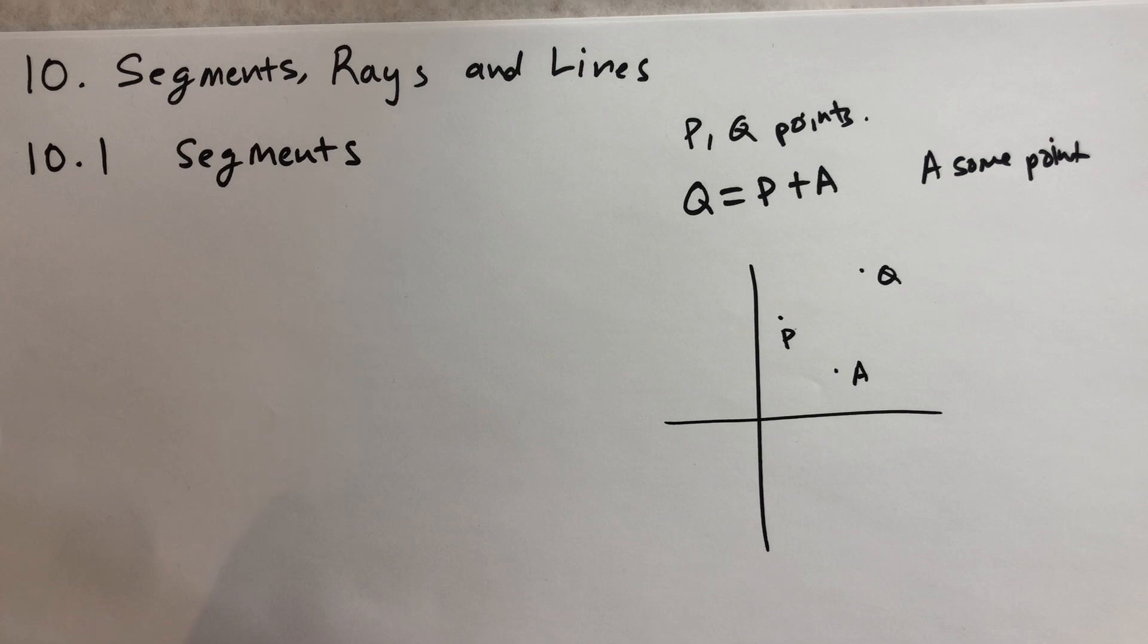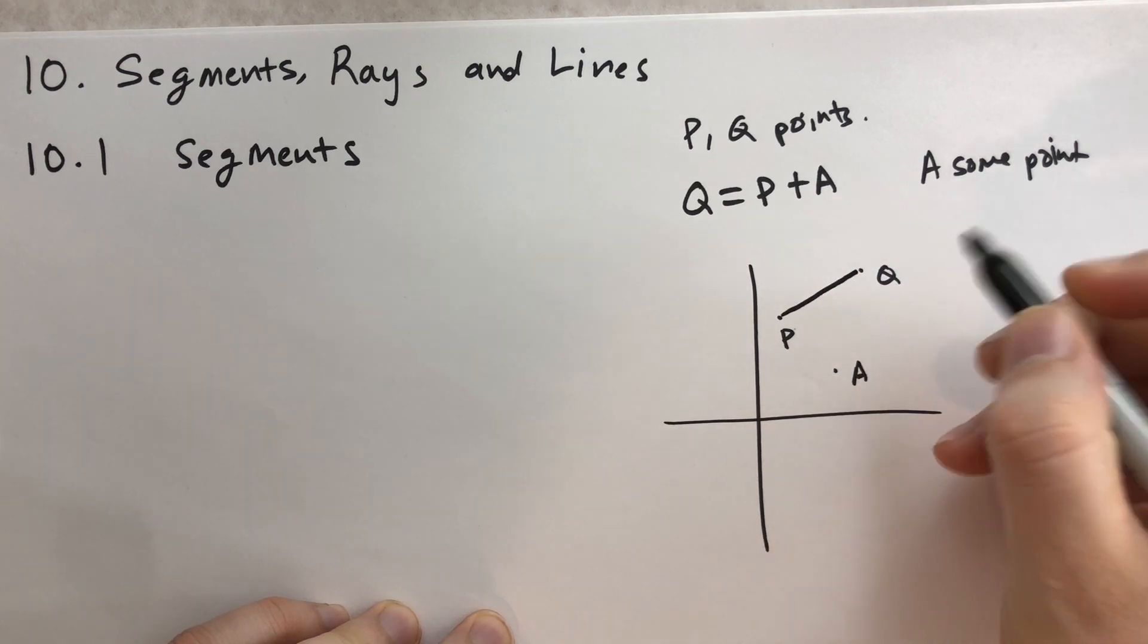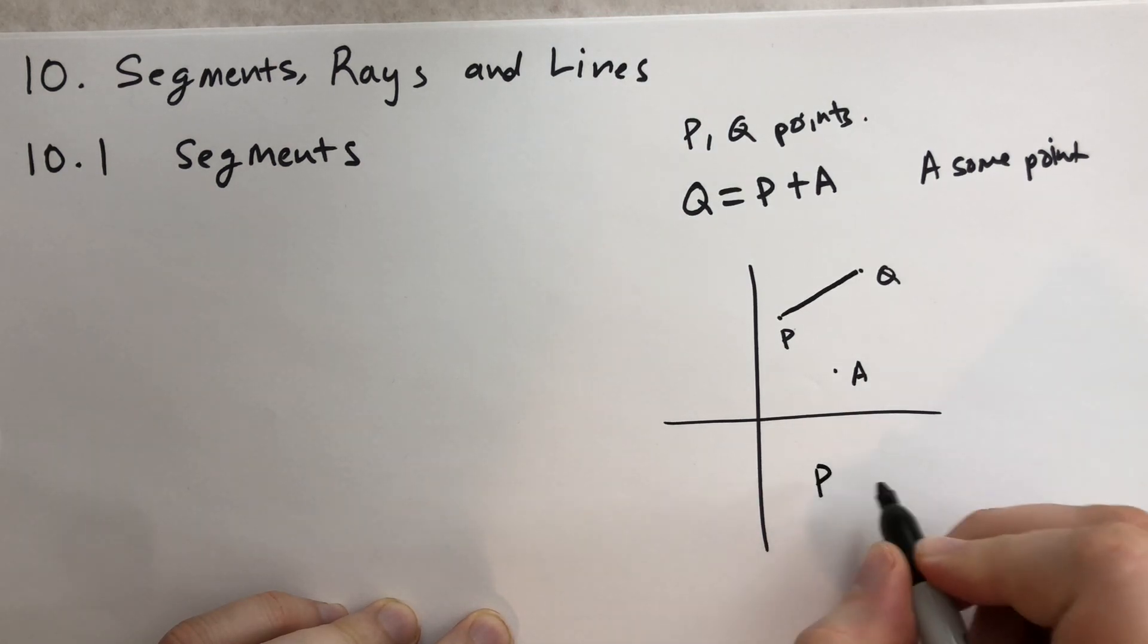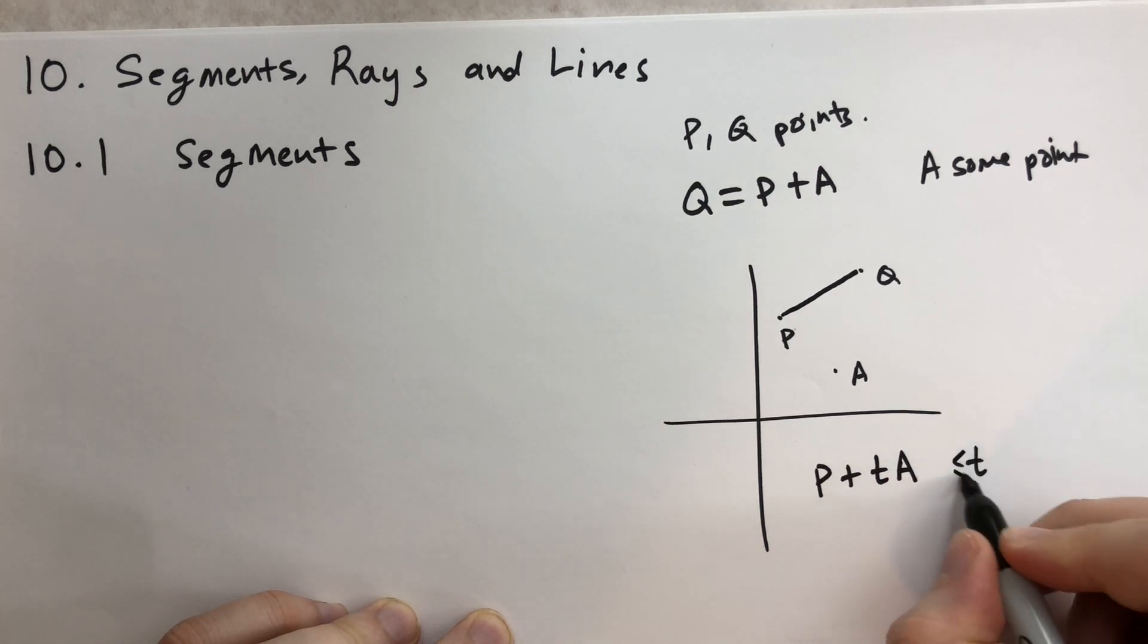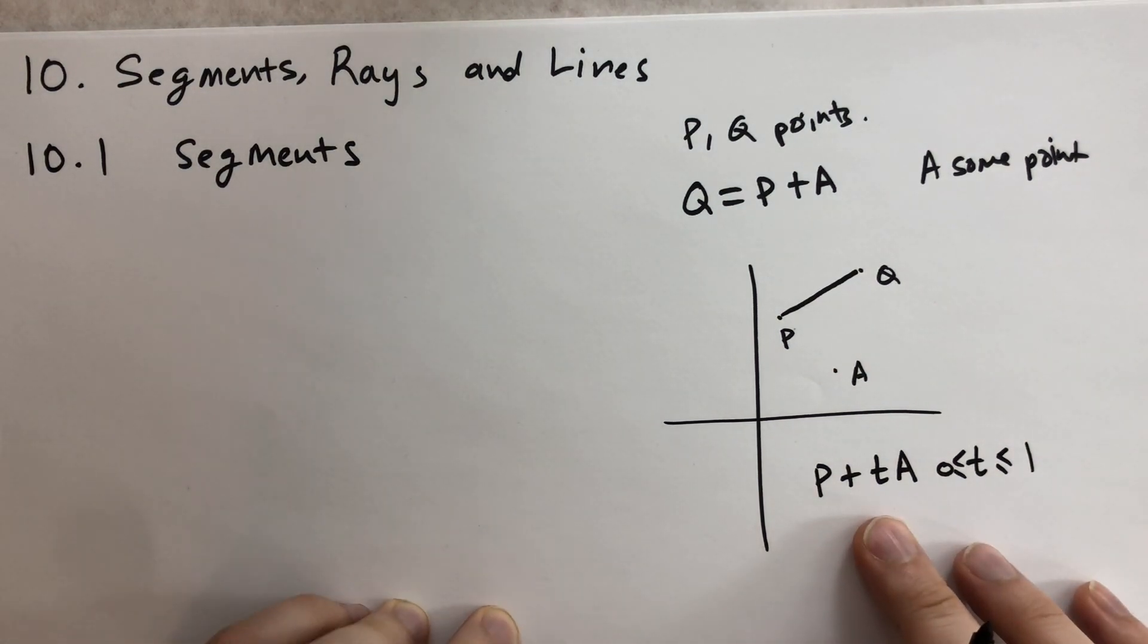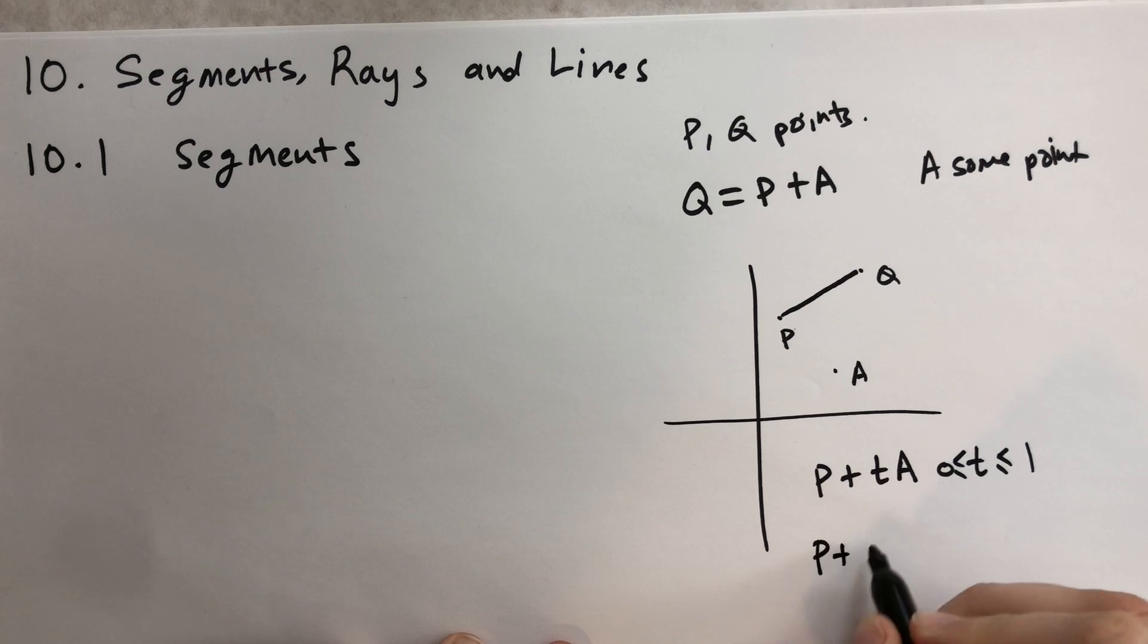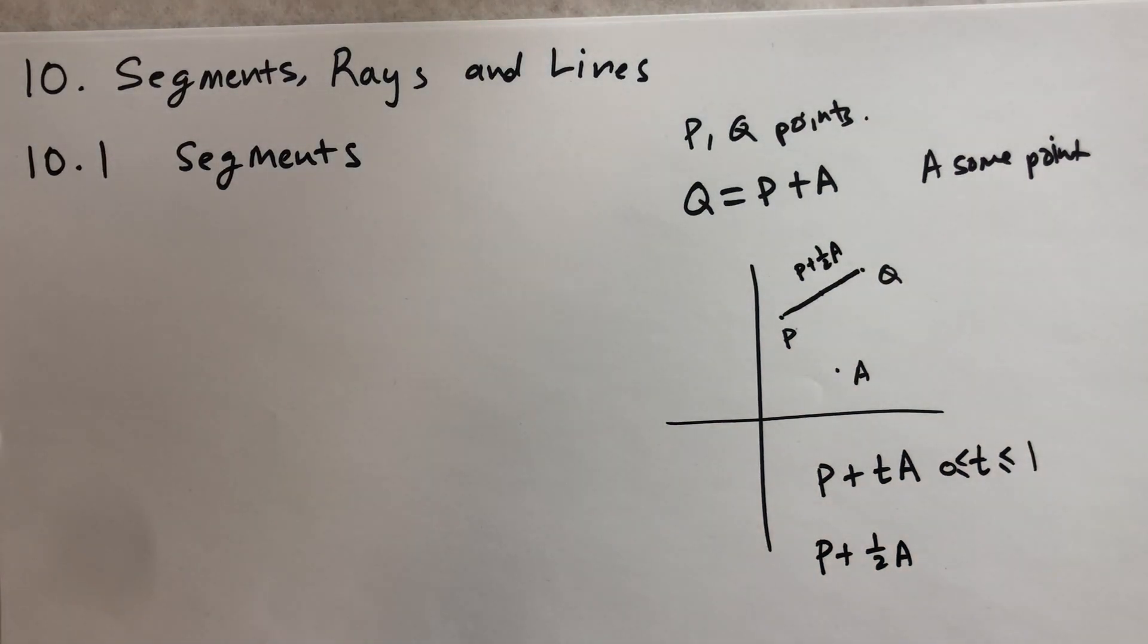We can define the line segment, the piece of the line between points P and Q, to be P plus TA, where T starts at 0 and goes all the way up to 1. So T goes from 0 to 1, T is just a real number. The point halfway would be P plus one half A.